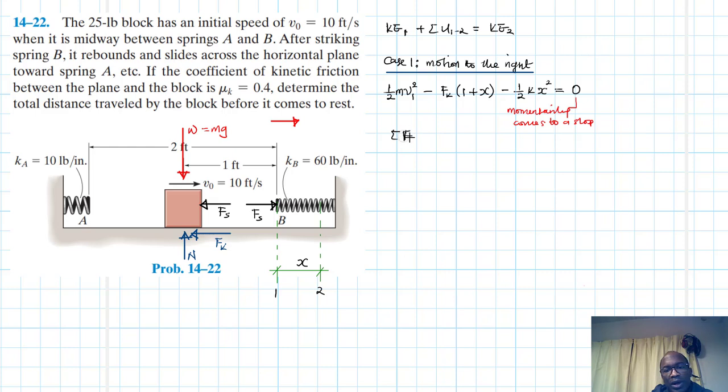So, let's find what FK is. So, summation of forces in the Y equal to M A Y. And our A Y is just equal to zero. And therefore, this will just give N minus W equal to zero. And therefore, our N is just equal to MG. And our FK therefore, is just going to be equal to Mu K times N, which is just equal to 0.4 times 25. It's already in pounds. And, this FS is just equal to K times X.